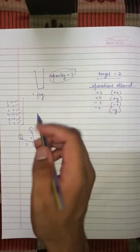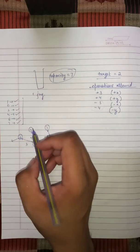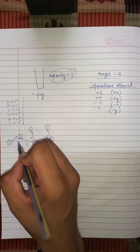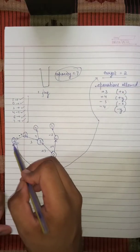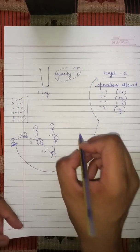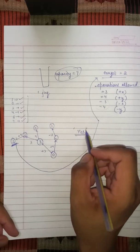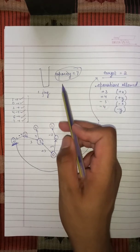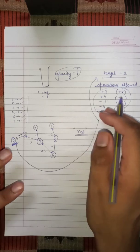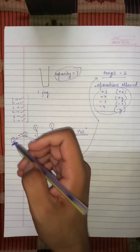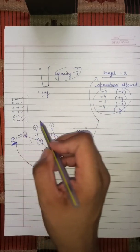From state 6, we can't add anything because it would exceed capacity. Minus 3 takes us to 3 (already visited). But minus 4 takes us to state 2, which is our target state! We've found the answer — yes, it is possible. We can measure 2 liters. As soon as we reach 2 we return true. If the queue becomes empty without finding the target, we return false.